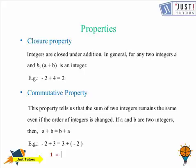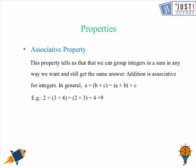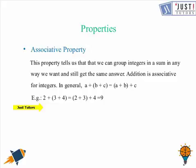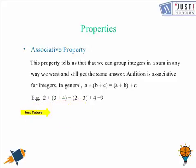Now let's move to the associative property. This property tells us that we can group integers in a sum in any way we want and still get the same answer — addition is associative for integers. In general, (a + b) + c = a + (b + c). For example, (2 + 3) + 4 = 2 + (3 + 4). If we solve both sides, the answer is 9.